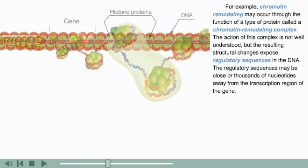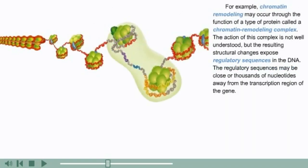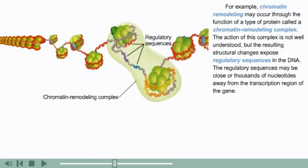For example, chromatin remodeling may occur through the function of a type of protein called a chromatin remodeling complex. The action of this complex is not well understood, but the resulting structural changes expose regulatory sequences in the DNA.